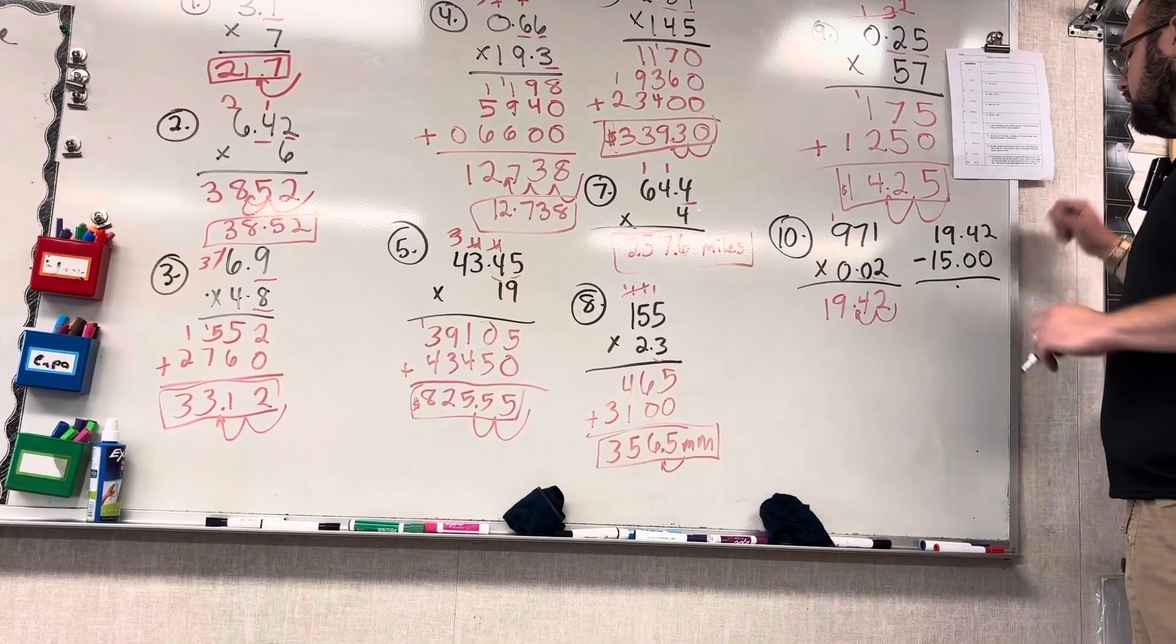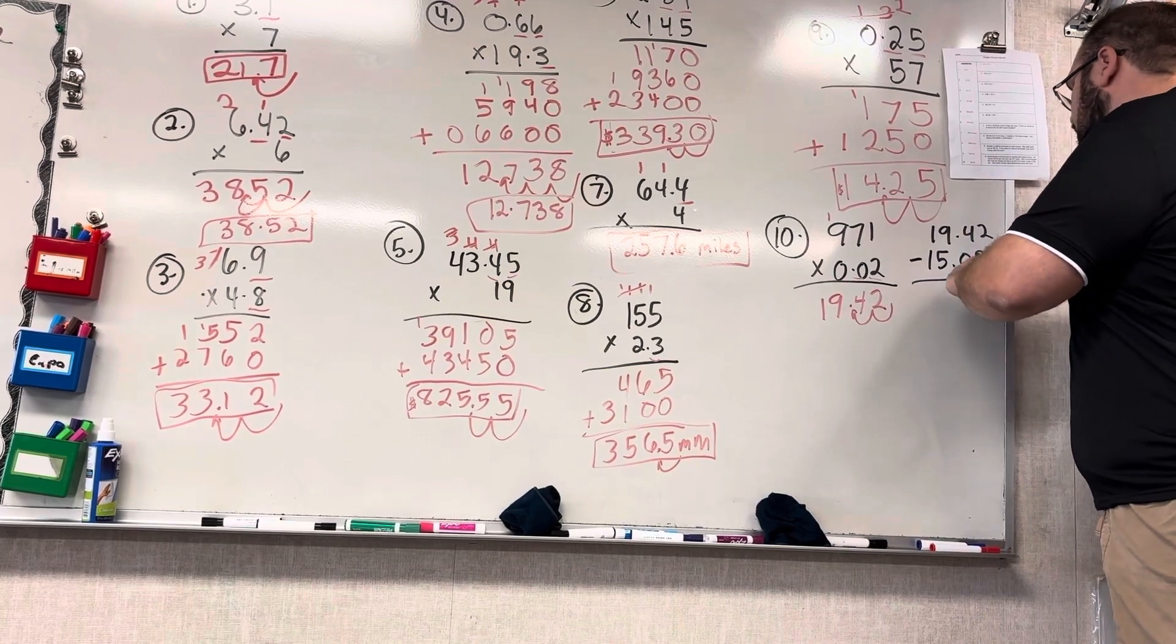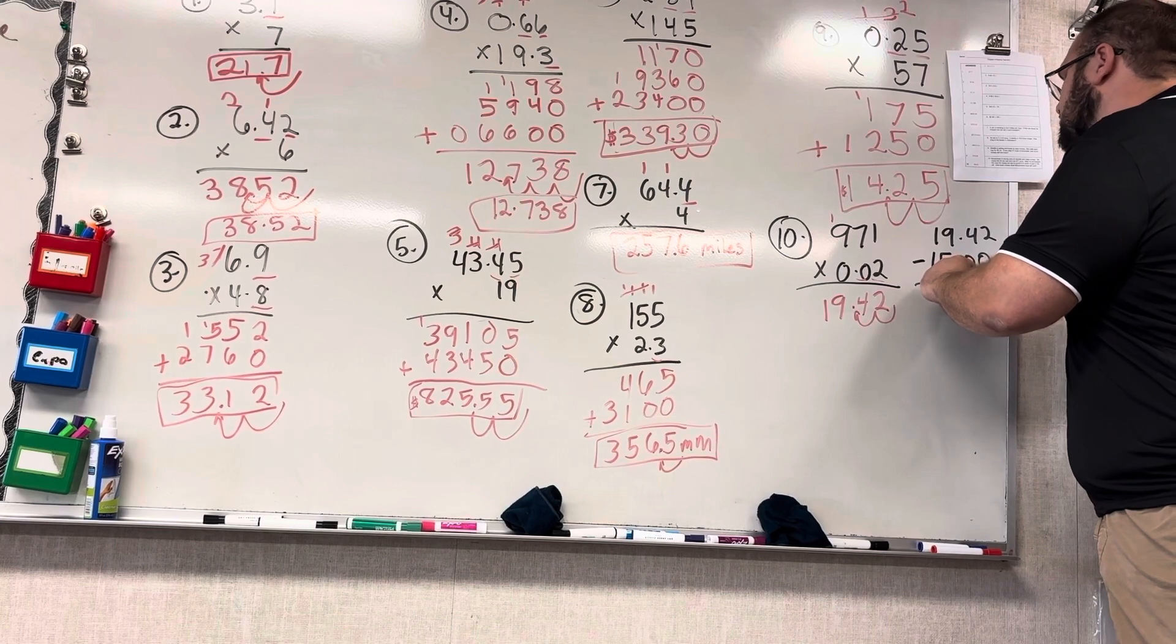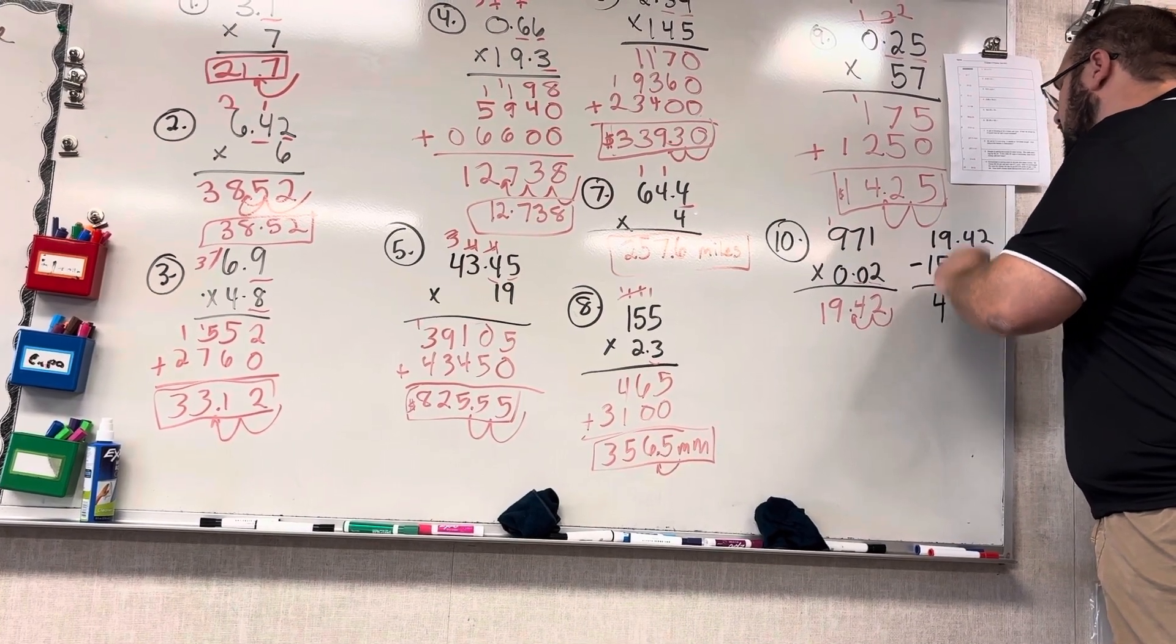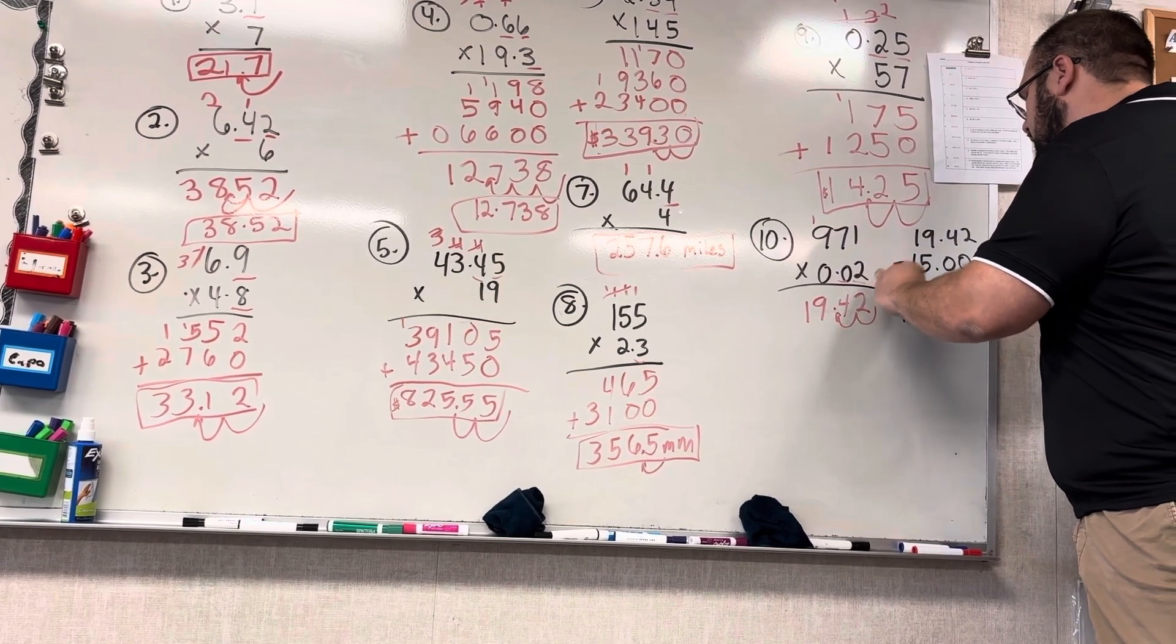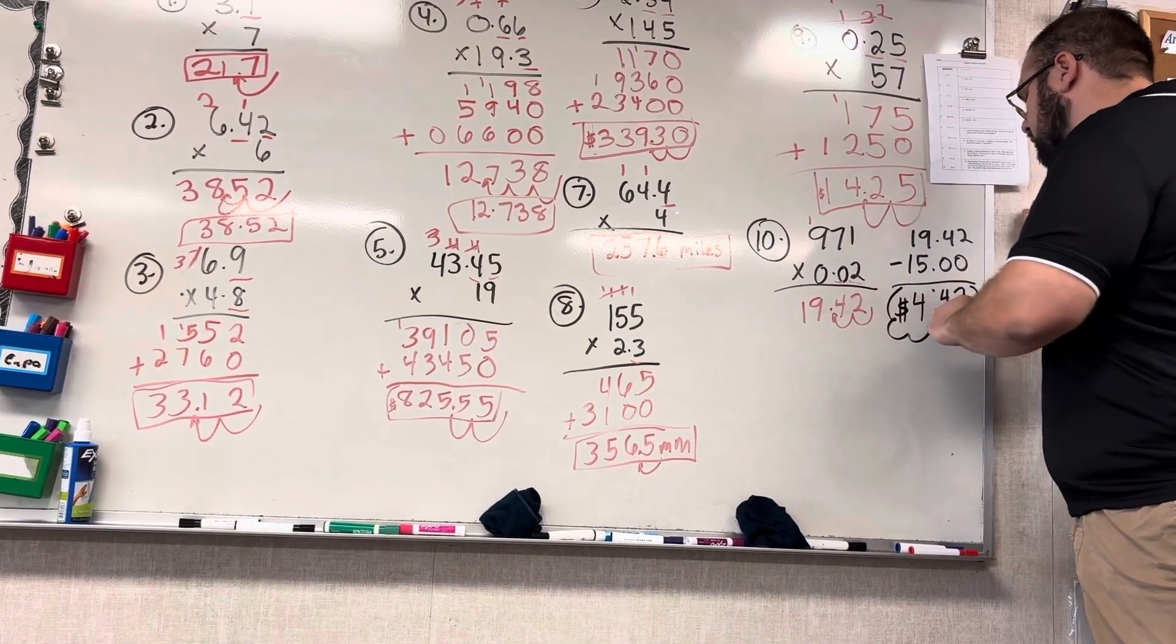And then subtract normal. 2 minus 0 is 2, 4 minus 0 is 4, 9 minus 5 is 4, and 1 minus 1 is 0. So I have $4.42.